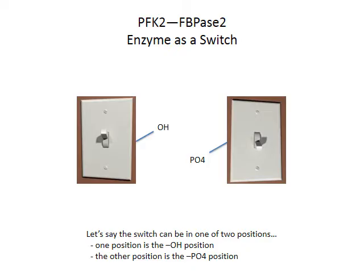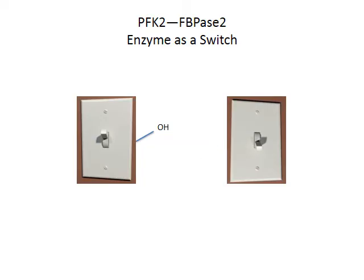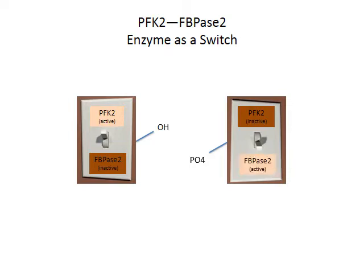Let's describe our enzyme according to this switch. In the OH orientation, the PFK2 function is active and the FBPase-2 function is inactive. In the PO4 orientation, PFK2 is inactive and FBPase-2 is active.